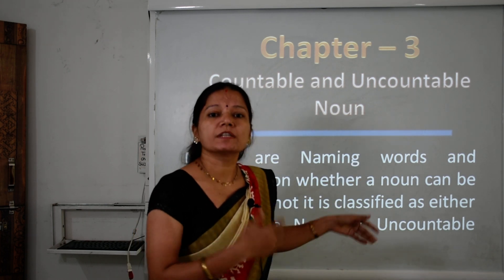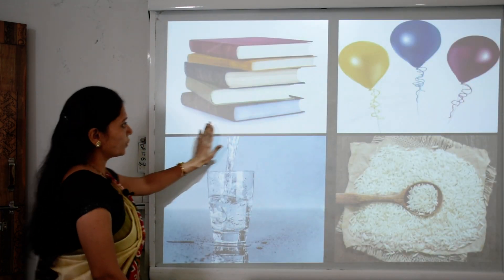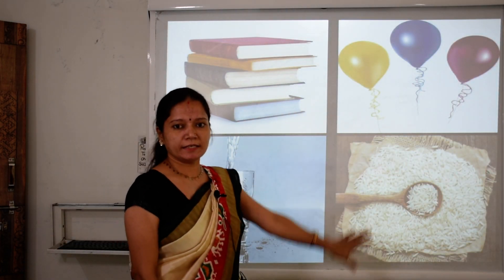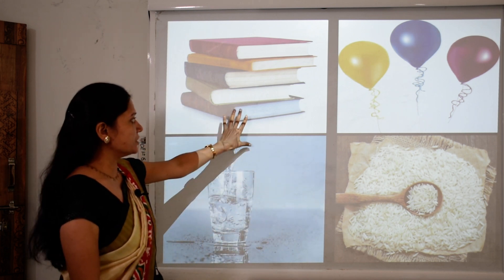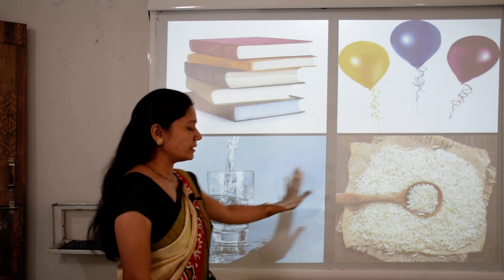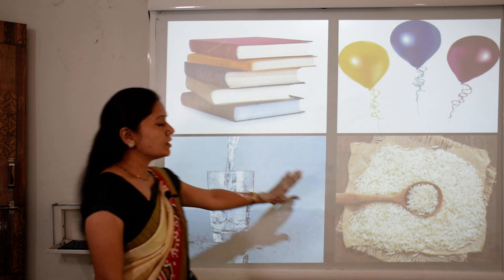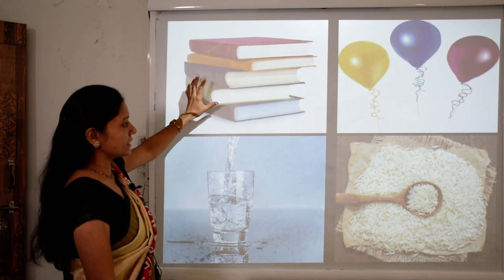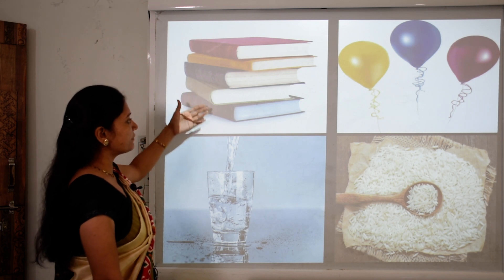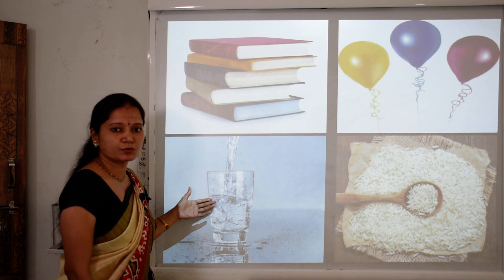Let's understand this with one example. Children, what do you see here? There are images of books, balloons, water, and rice. What is the difference between these two images and these two images?